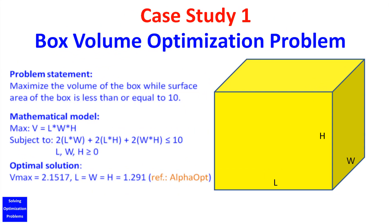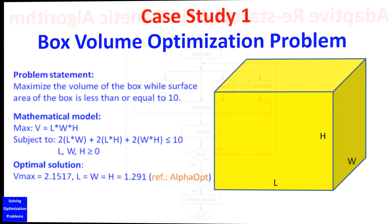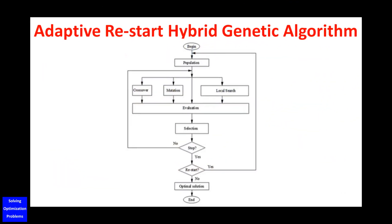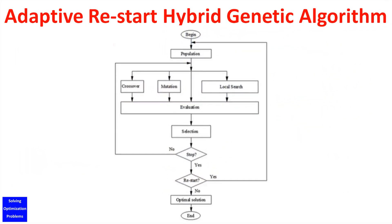I'm going to demonstrate how to use this general template code to solve a box volume optimization problem. Here are details of the box volume optimization problem — pause the video for a while to study and understand the problem. Here is the general structure of my Adaptive Restart Hybrid Genetic Algorithm.